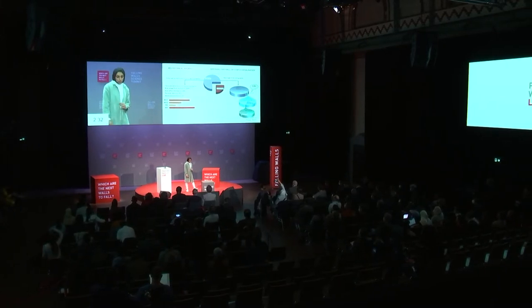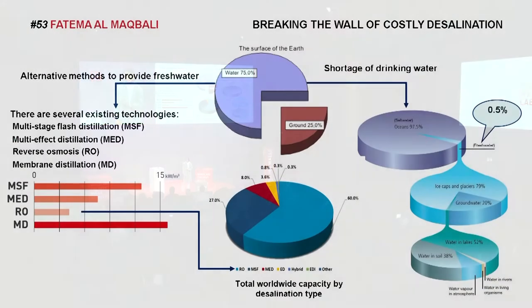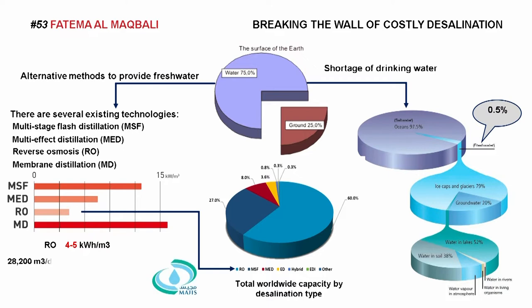RO is commonly used in the world due to its low energy consumption, but still the energy consumption in RO is high. As a real example, let's look at the electricity bill of Magis, a desalination company in Oman — just imagine the energy cost for all desalination in the country. Moreover, brine as a byproduct in RO is discharged to the ocean and imposes ecological issues for living species.